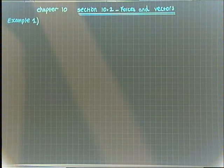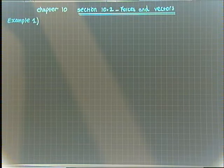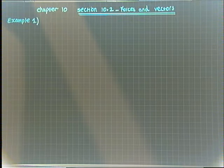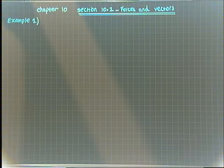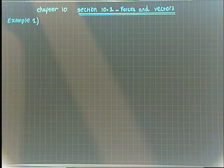Chapter 10, section 10.2: forces and vectors. You can write forces as a vector using i and j notation or as a column vector. You can find the resultant of two or more forces given as vectors by adding their vectors.